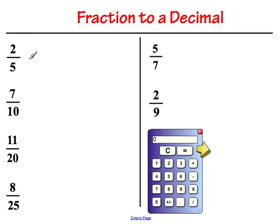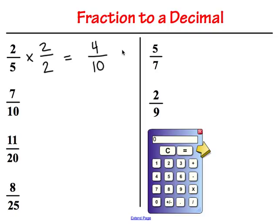Let's start with 2 fifths. Could we multiply the top and the bottom of this fraction to get a 10 in the denominator? Well, 5 times 2 is 10, so we're going to multiply both the denominator and the numerator by 2. This gives us 2 times 2 is 4, and 5 times 2 is 10. We now have the equivalent fraction 4 tenths, which is easy to write as a decimal — 4 in the tenths place: 0.4.